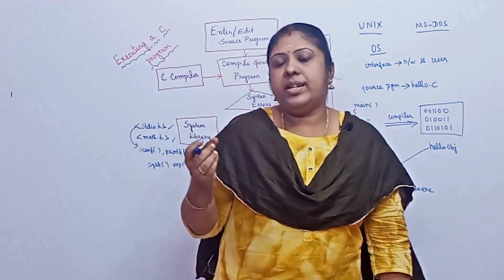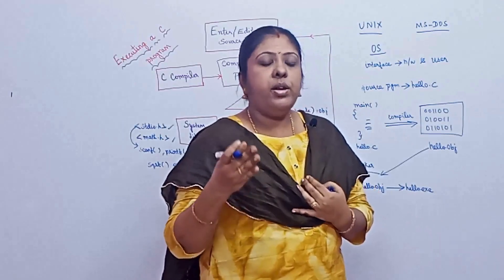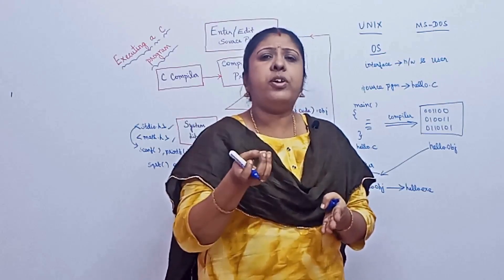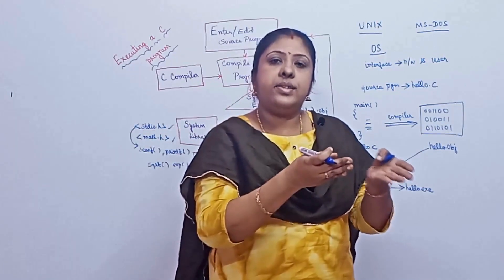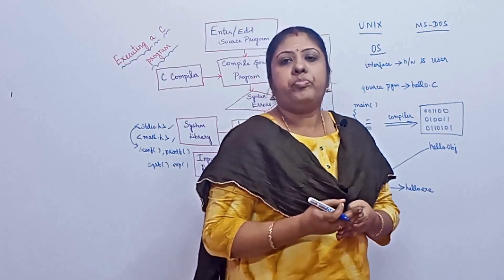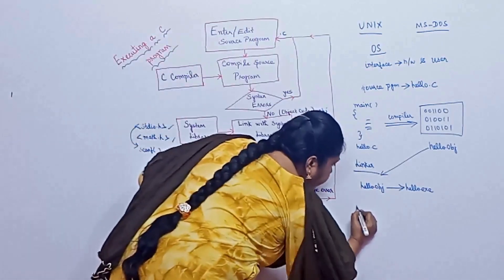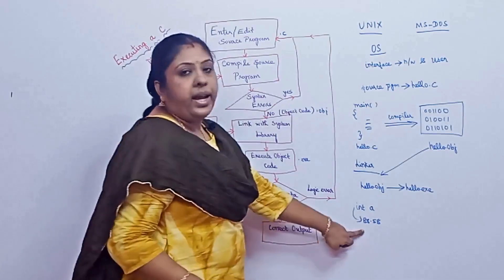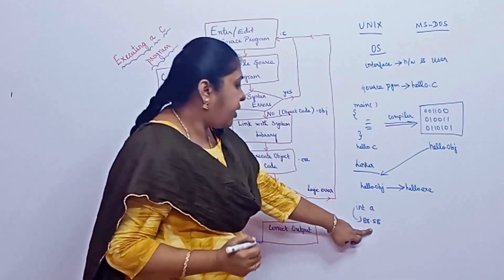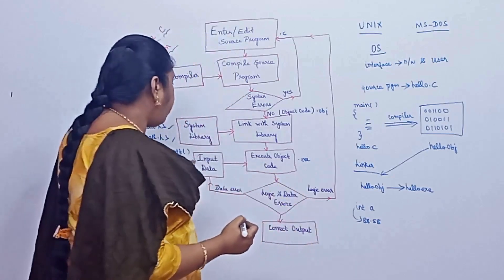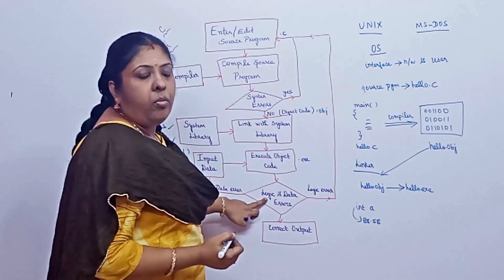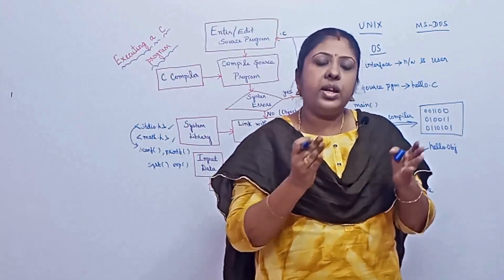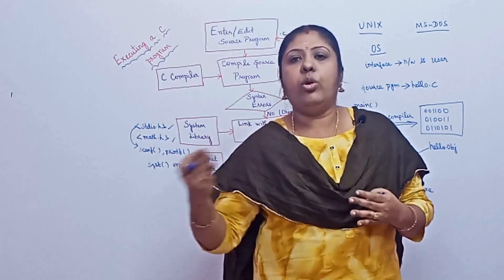Data errors are straightforward. For example, if you are declaring a variable as an integer — say, integer a — and when running the program you give input as a float value like 88.58, that will cause a data error. A number with a decimal point is called a float. So it will show a data error and you have to re-input the data.